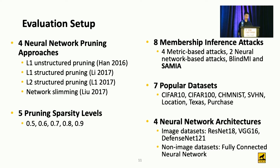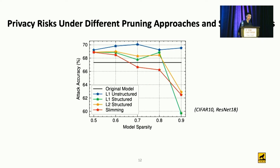Next, let's evaluate our proposed methods. In the evaluation, we investigated four representative neural network pruning approaches and five different pruning sparsity levels from 0.5 to 0.9, where 0.9 means 90% of parameters are removed from the dense model. We also compared SEMI with six existing membership inference attacks on seven popular datasets, and evaluated our models on four neural network architectures.